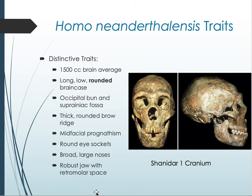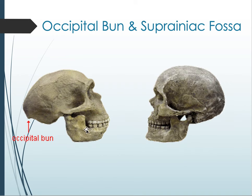The eye sockets are relatively round. A key diagnostic feature for your quizzes is the retromolar space — a gap in the back of the jaw of Homo neanderthalensis between the mandible and the molars. You can see that the face is pulled forward compared to the flatter face in Homo sapiens, who have chins whereas Neanderthals do not. Familiarize yourself with these major differences between the two species.